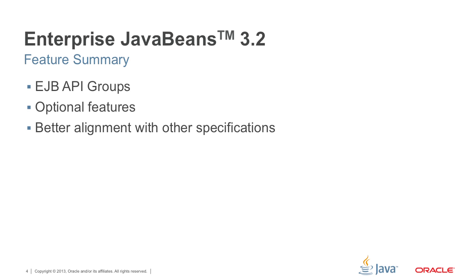On that last point, we won't go into details further, but I'll mention that the EJB specification now acknowledges the existence of the CDI spec and inject constructors. We documented new JMS MDB activation config properties, standard activation config properties, and cleaned up alignment with other specifications.